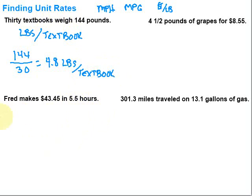Let's take a look at this next one. It says Fred makes $43.45 in 5.5 hours. What unit rate are we interested in? Are we interested in dollars per hour, or hours per dollar? Well, typically people are paid in dollars per hour, so that's the unit rate that we're looking for — dollars per hour. And that tells us how to set it up. The number of dollars is going to go on top: 43.45. And the number of hours on the bottom: 5.5.